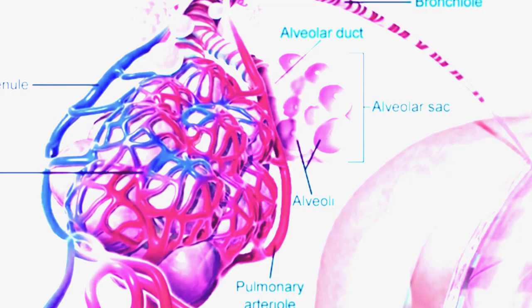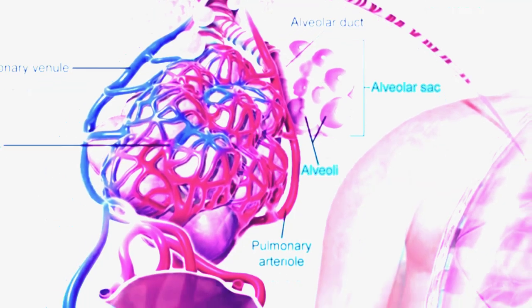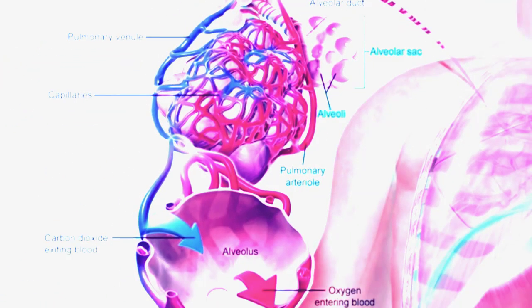The accumulation of inflammatory exudate and immune cells in the alveoli results in consolidation, where the normally air-filled spaces of the lung become filled with fluid, pus, and cellular debris.